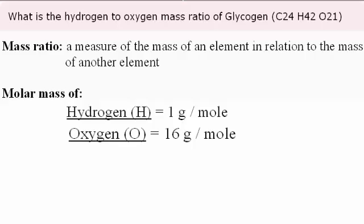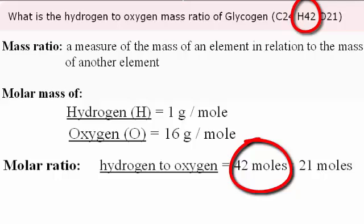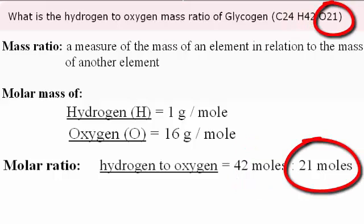So knowing the molar mass is helpful, but it doesn't help us to establish a relationship between hydrogen and oxygen. For that, we would have to refer to the molar ratio of hydrogen to oxygen. And we derive this ratio from the glycogen compound itself. We can see here that for every mole of glycogen, there are 42 moles of hydrogen and 21 moles of oxygen.